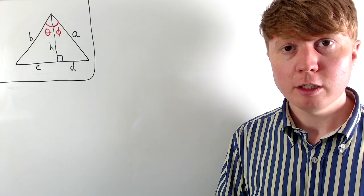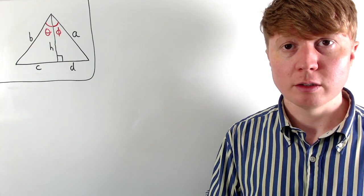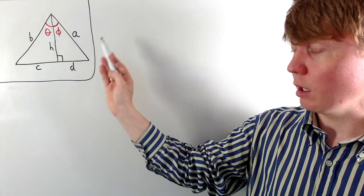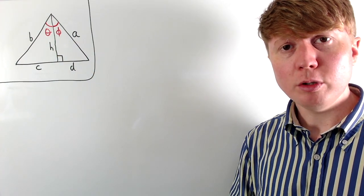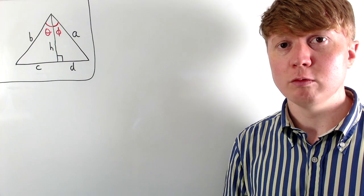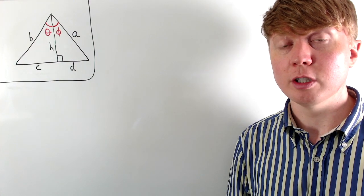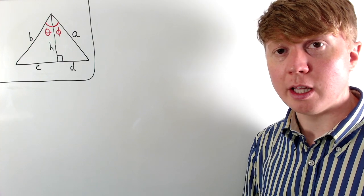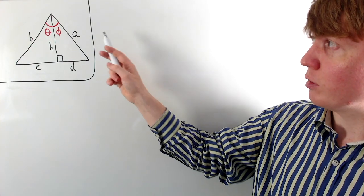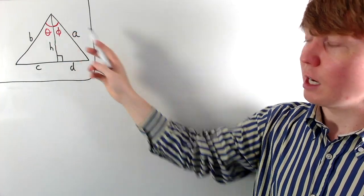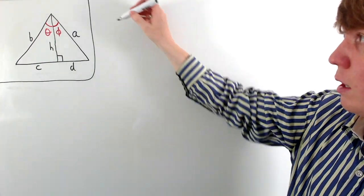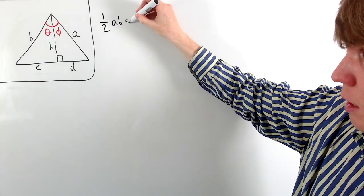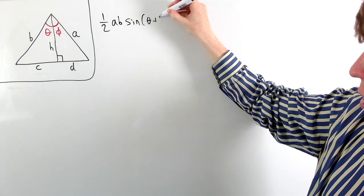We're going to look at two really nice proofs of the angle sum formulas for sine and cosine, both of which rely on this diagram here. Our proof for the angle sum formula for sine relies on the formulas for the area of this triangle. One way of expressing the area of this triangle is a half times a times b times sine of this angle at the top, so the area is a half ab sine(θ + φ).